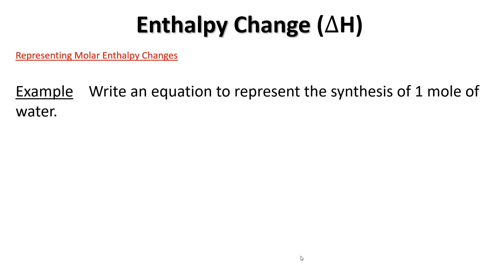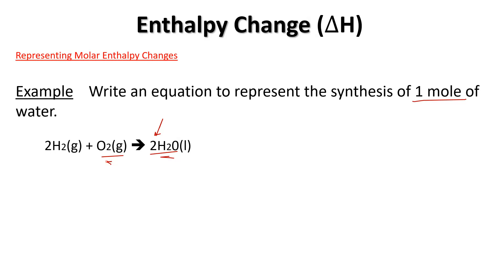Let's write an equation to represent the synthesis of one mole of water. We've got hydrogen gas plus oxygen gas giving us water. This balanced equation is actually per two moles, so we need to divide each term down by two to get it per one mole. This is an exothermic process, and the known value for this reaction is delta H equals negative 285 kilojoules.